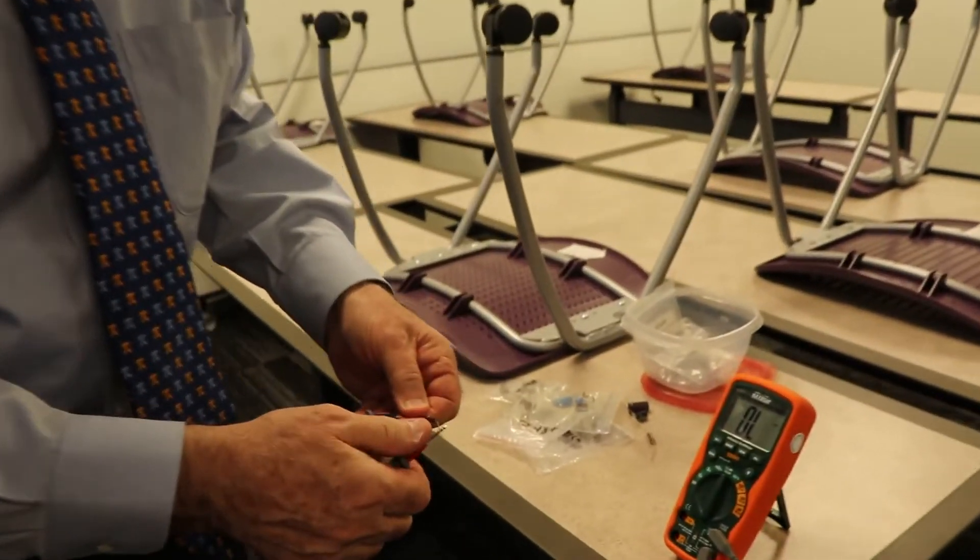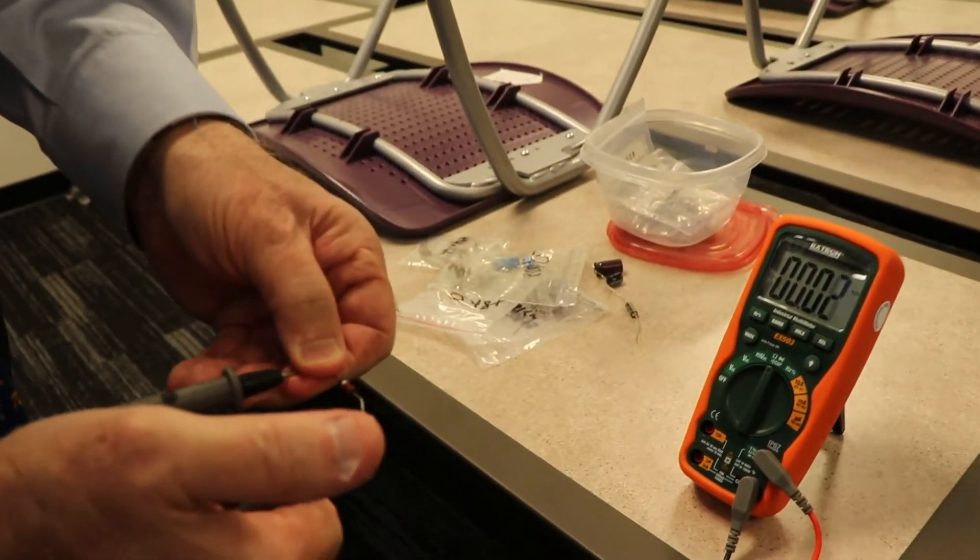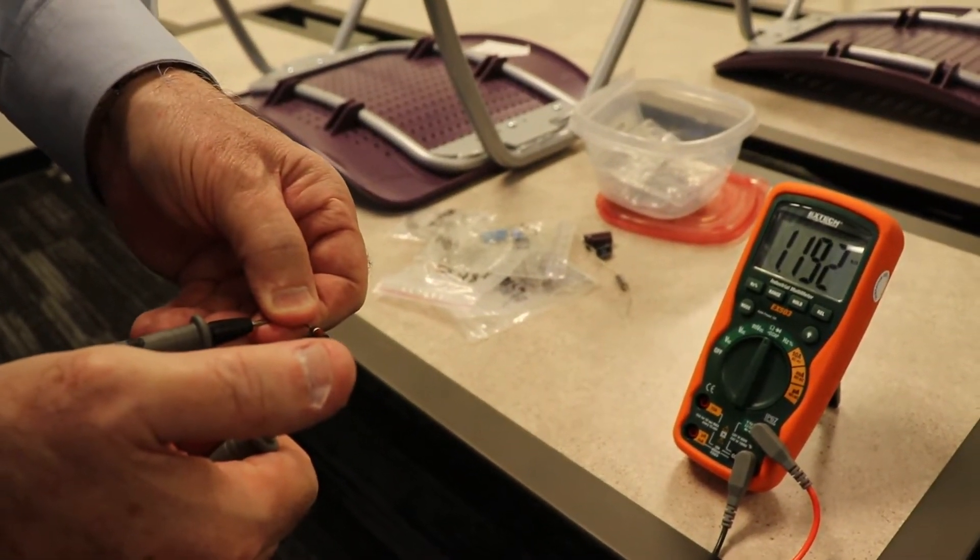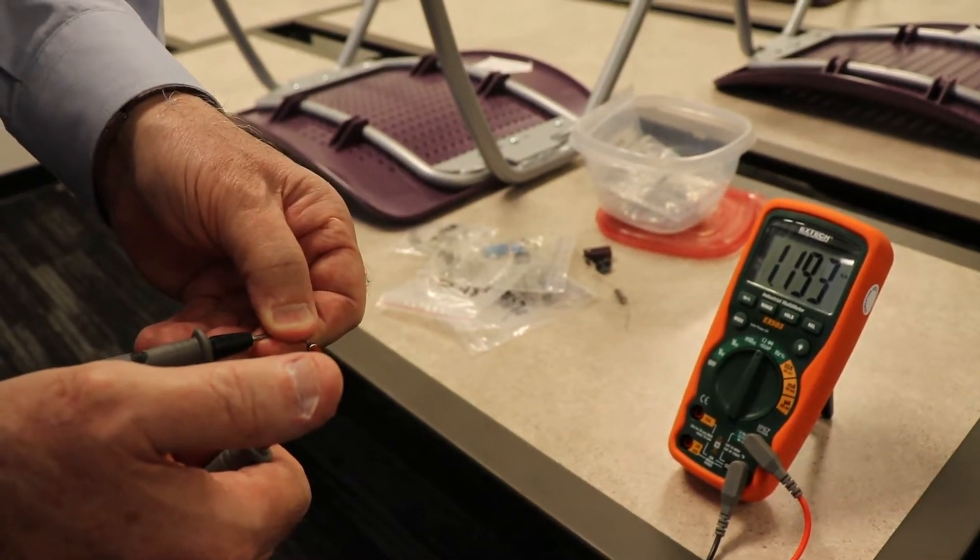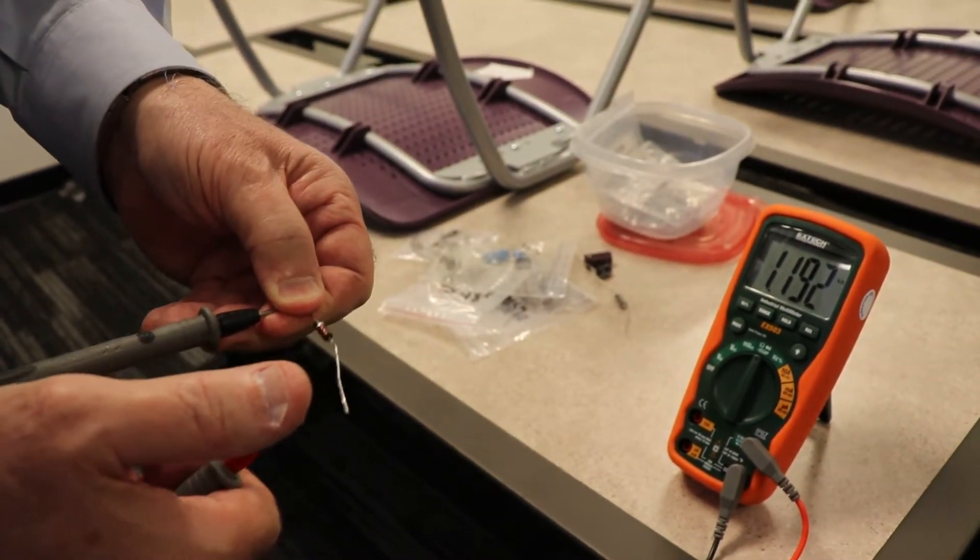Now you can also use the color code on the resistor. You don't want to put your thumb on both sides, because your body actually has some resistance. So it says 1.193 kiloohms, so it's 1,193 ohms right here.